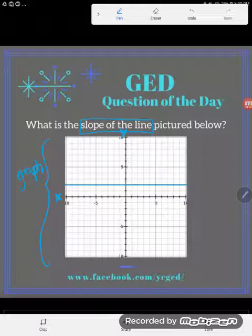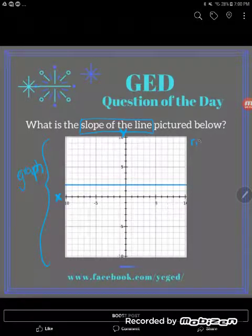But we're looking for slope of the line and we've been given a graph. And the easiest way to do that is just to count your rise over your run. Slope again is a measure of steepness, rise over run.